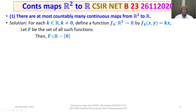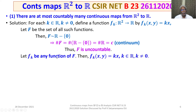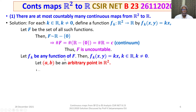Then F is in bijection with R minus the singleton set {0}. This implies the cardinality of F equals the cardinality of R minus {0}, which equals the cardinality of R, that is continuum. Therefore F is uncountable. Let F be any function from capital F, and let (A, B) be an arbitrarily chosen point in R square. We will show that F is continuous at (A, B).